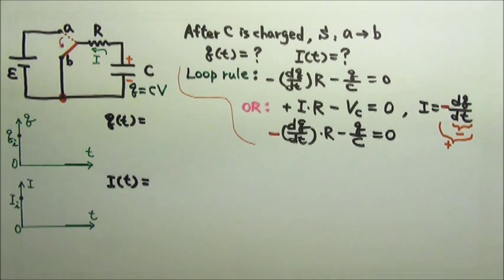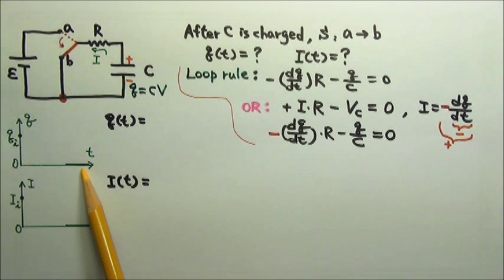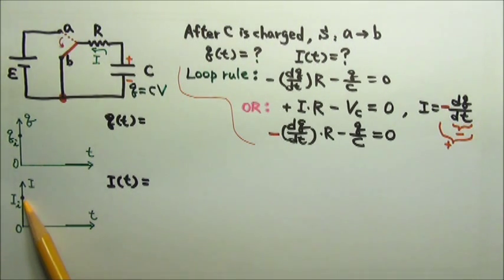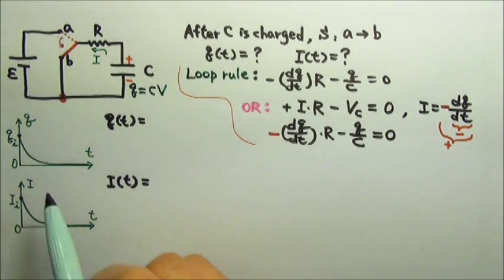Initially, there is a charge on the capacitor. Then the capacitor gets fully discharged, so there is no more charge on the capacitor. Same for the current. Initially, there is a discharging current. A long time later, there is no more charge on the capacitor and no more discharging current. So both are exponential decay.